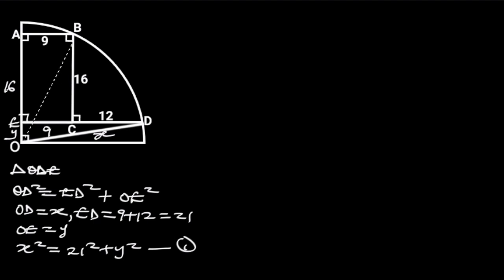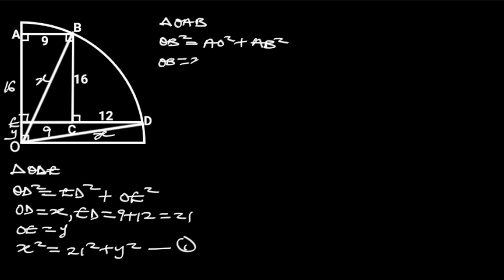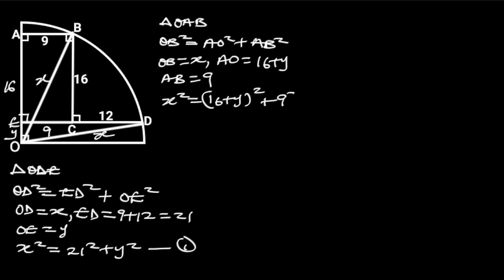Next, let's draw another straight line from O to B. Observe that OB is the radius of the quarter circle. Since we have taken the radius to be X, it follows that OB is equal to X. Let's focus on triangle OAB. Triangle OAB is a right triangle, so from Pythagoras' theorem: OB squared is equal to AO squared plus AB squared. OB is equal to X, AO is equal to 16 plus Y, and AB is equal to 9. Substituting these values gives us: X squared is equal to (16 plus Y) squared plus 9 squared. Let this be equation 2.